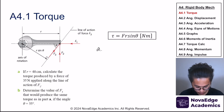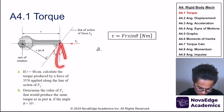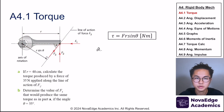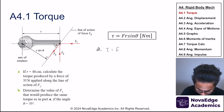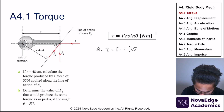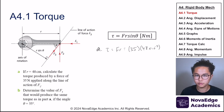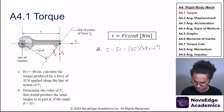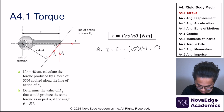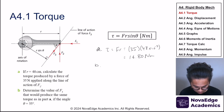For part a of the practice problem: since F2 and the radius are already perpendicular, we don't need sine theta. Torque equals F times r, which is 35 newtons times 48×10⁻² meters, giving 16.80 newton-meters.